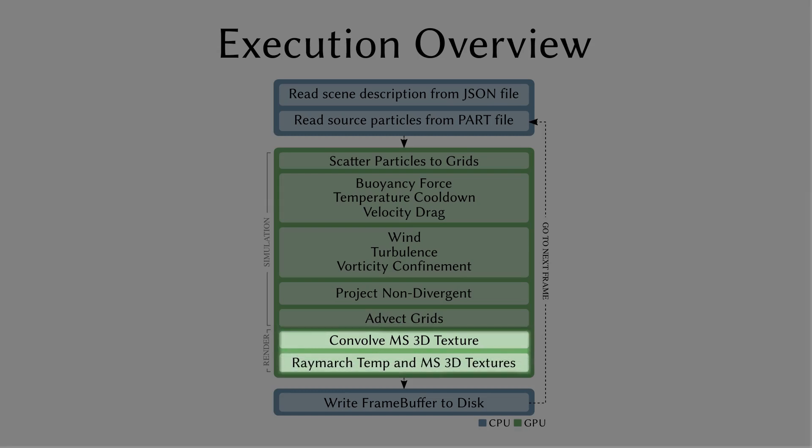The rendering part of the algorithm follows a standard grid ray-marching implementation, preceded by a 3D convolution to approximate the multiple scattering contribution of the emission. The time step ends by writing the frame buffer to disk using the CPU before it moves to the next frame, back to the sourcing step.